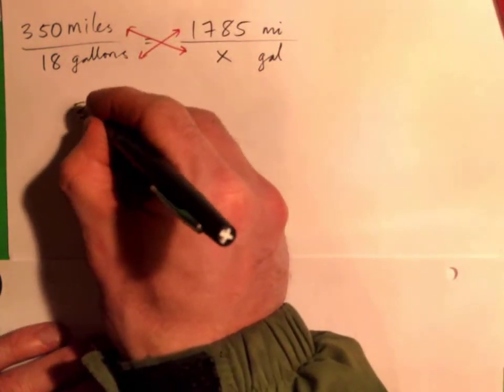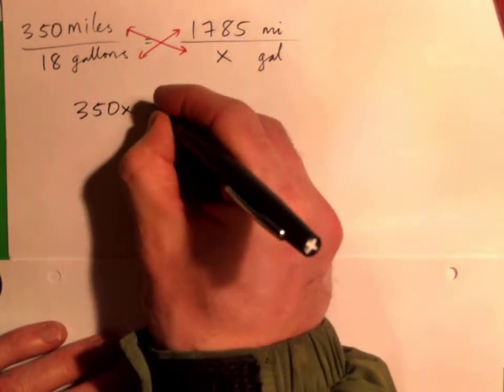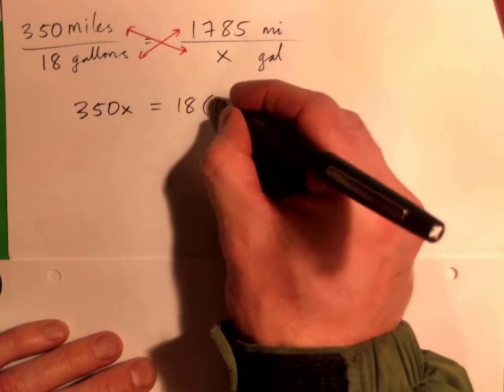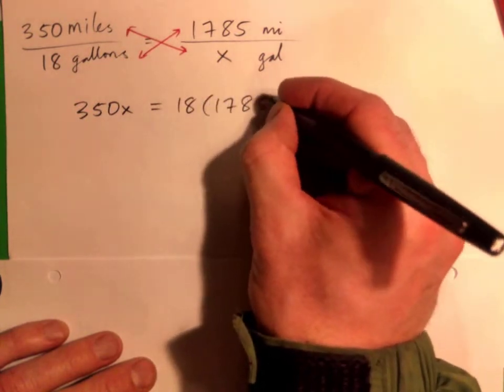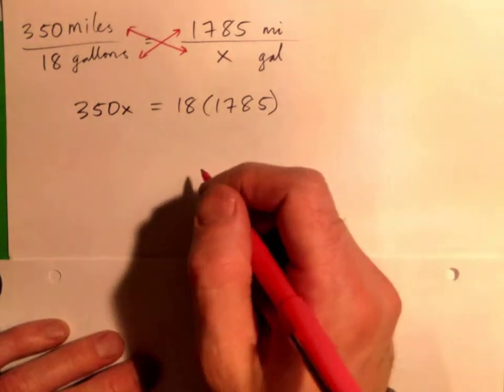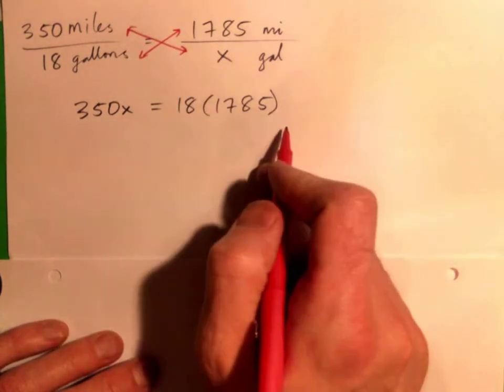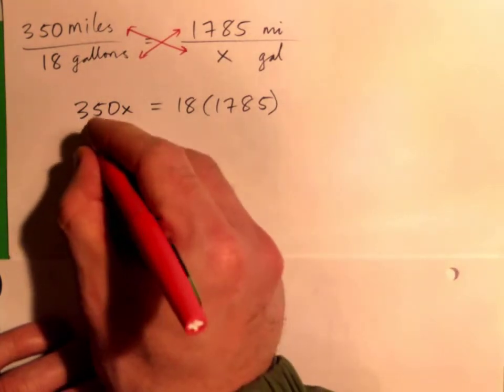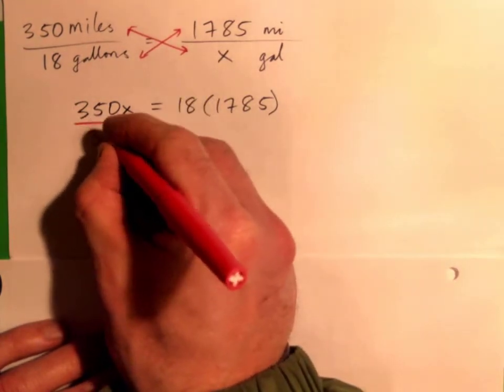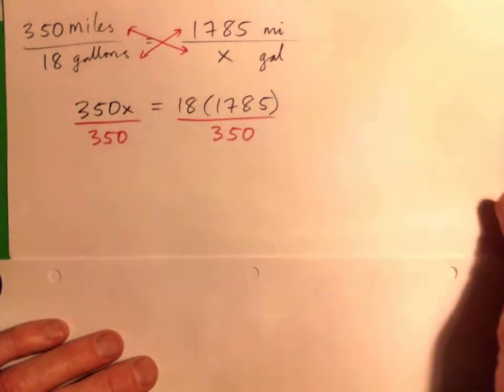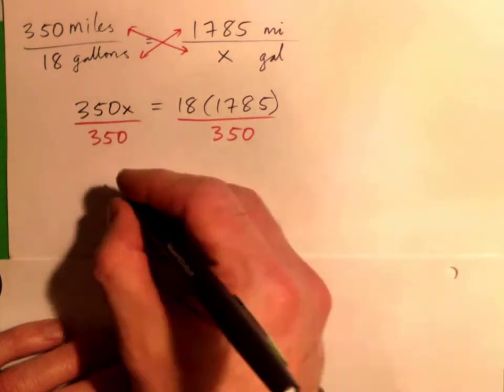And we could multiply and then divide. Yeah, this is a bit messy, isn't it? What I'm going to do is divide right away. I'm going to divide by 350 on both sides and that will help me get X on its own.